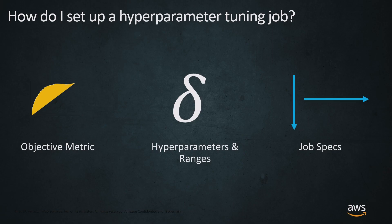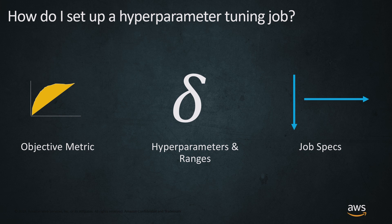So how do we set up a hyperparameter tuning job? The good news is it's easy — it might sound scary, but it's actually pretty accessible. The first thing you need is an objective metric: AUC on your validation data, binary classification accuracy, precision, recall — there's a lot of content for evaluating machine learning models, so pick one and plug it into your tuner. The second thing is identifying the actual hyperparameters and the ranges to tune. For XGBoost that might be maximum tree depth; for a deep learning model it might be learning rate. Maximum depth might range from 1 to 10, 15, or 20.